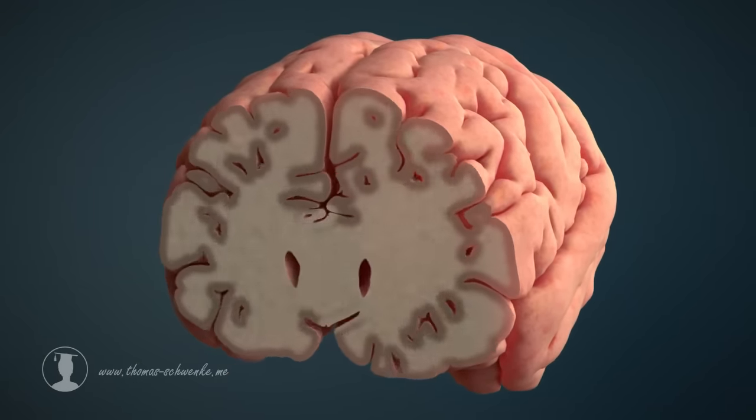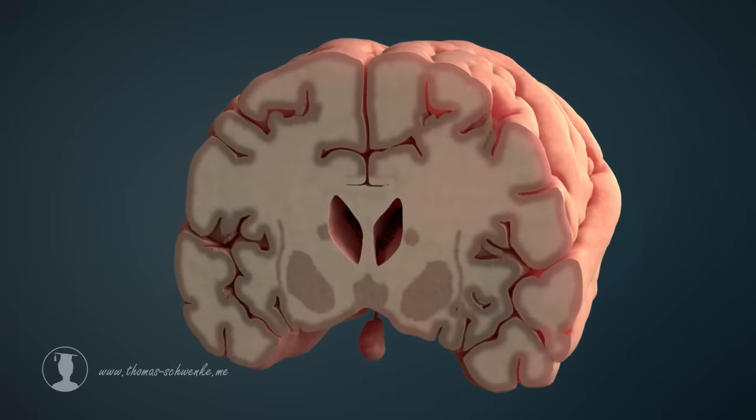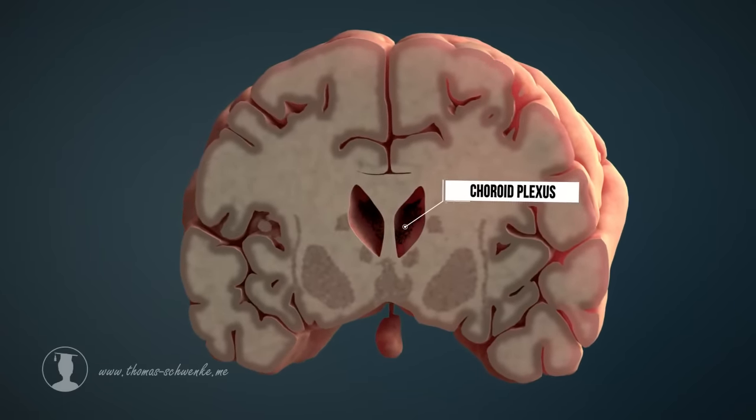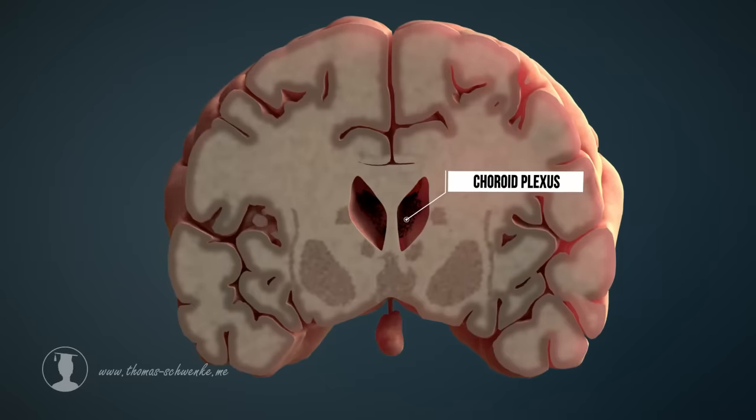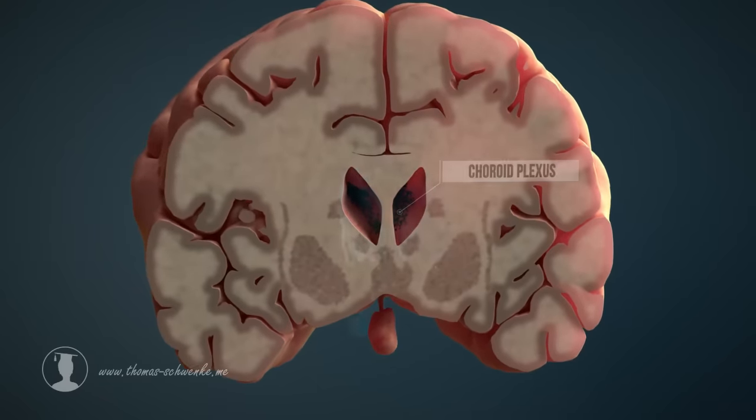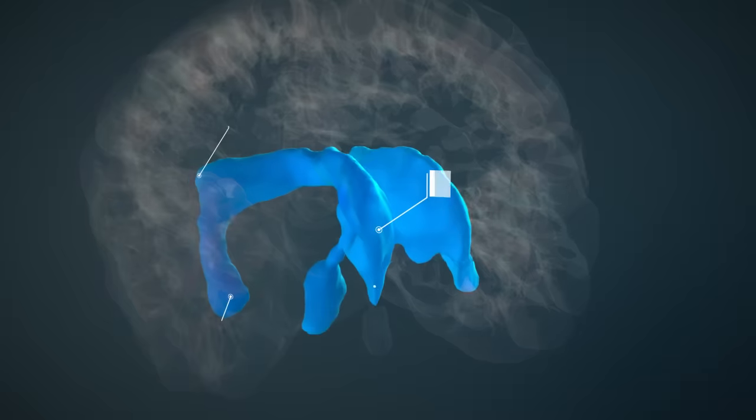Around 500 milliliters of cerebrospinal fluid is produced by cells in the brain per day. The cerebrospinal fluid circulates not only in the subarachnoid space, but also in cavities known as ventricles.